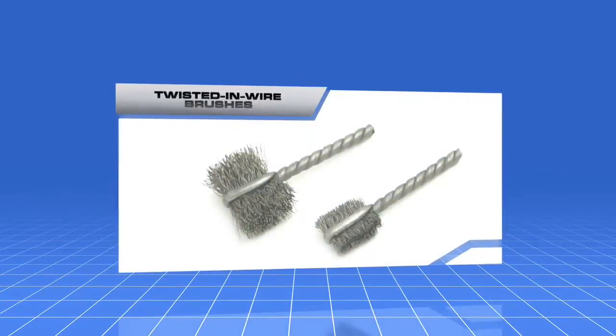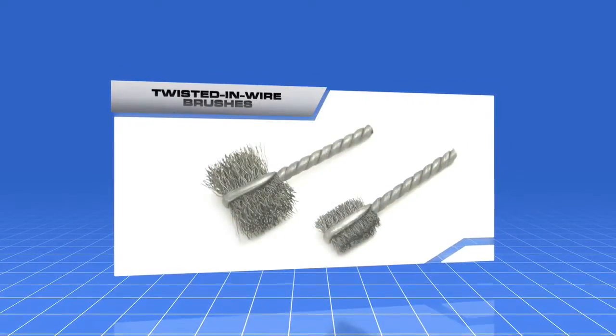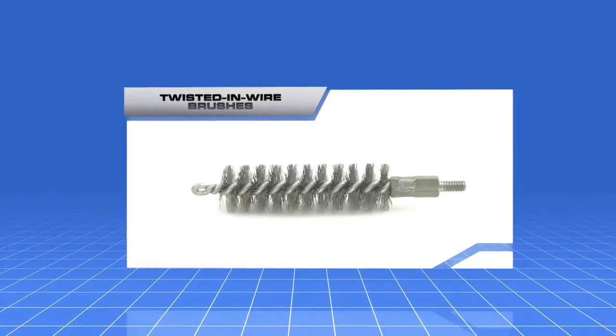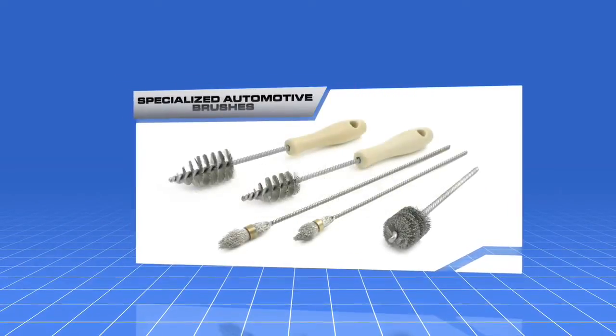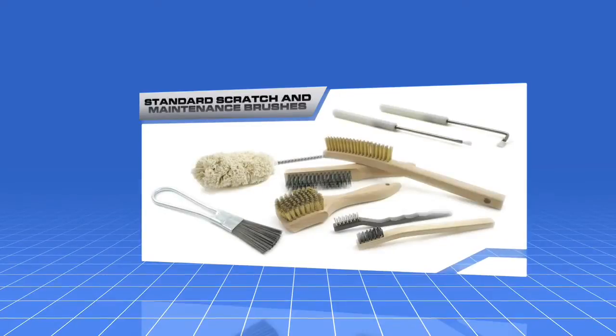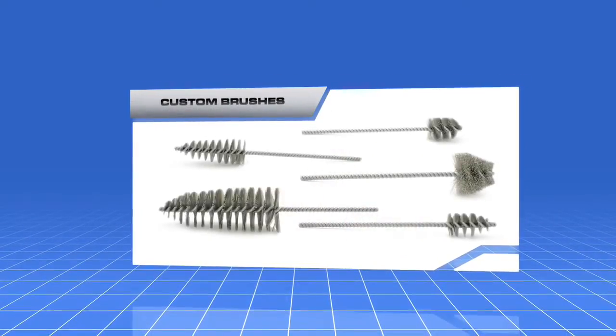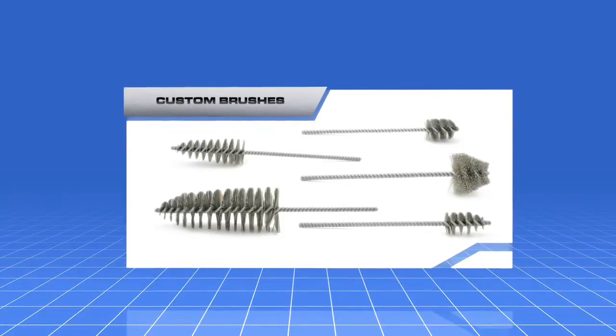Twisted in-wire brushes are also manufactured for thread cleaning, cross-hole deburring, tube, and flue applications. Highly specialized brushes for automotive, standard scratch and maintenance brushes, miniature brushes, and custom brush solutions are also available.